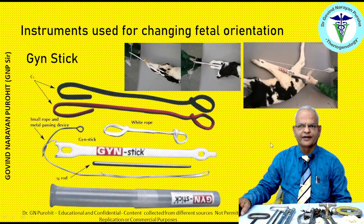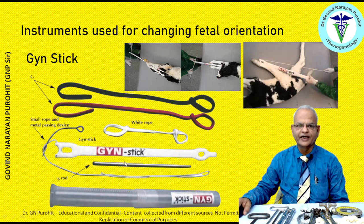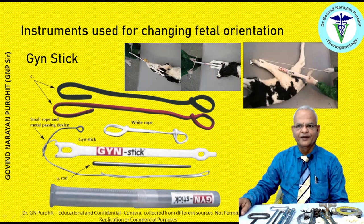There are reports of a new instrument called the gin stick or gain stick, used for a variety of purposes including detorsion of the fetus and pulling the fetal legs. Hopefully this instrument will be available at an appropriate cost and will be useful at the field level.